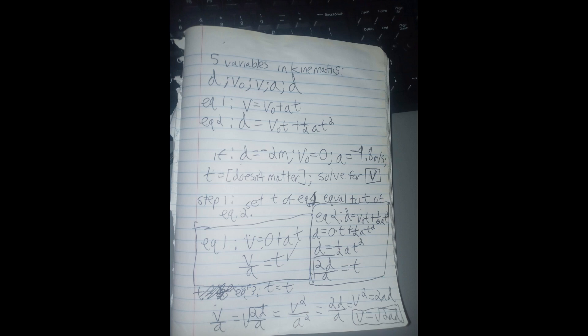To recap, there are five variables in kinematics: displacement, initial velocity, final velocity, acceleration, and time.